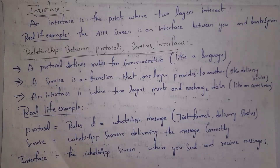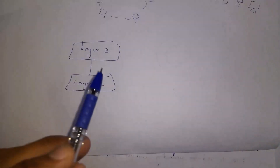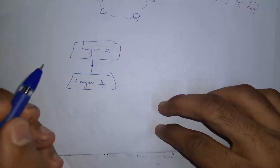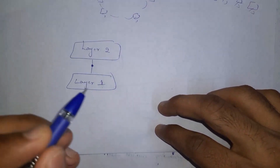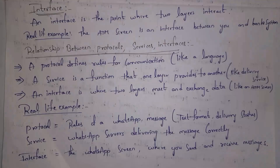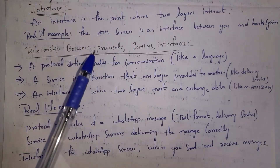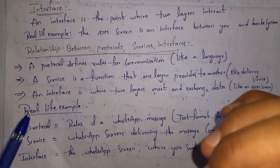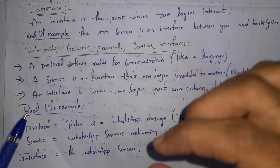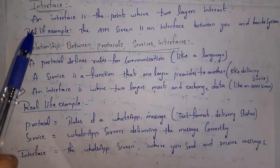An interface is the point where two layers interact. The work done by a lower layer that is useful to the upper layer is called a service, and the point where the two layers communicate is called an interface. In a real-life example, using an ATM machine we can do bank transactions. The ATM screen is the point where a person and the bank communicate with each other — we call this ATM screen an interface.